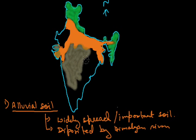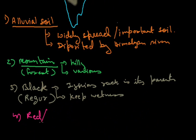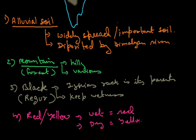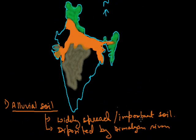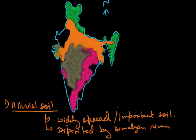Now let us come to another soil: red and yellow soil. When it is wet it looks red in color, while when it is dry it looks yellow in color. This is because of the iron content which is found in this soil. This soil is basically found in all these regions of India.